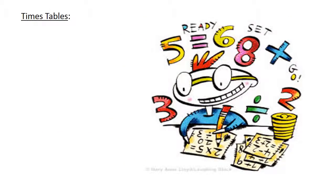Times tables: 7 times 6 equals 42. 6 times 7 equals 42.